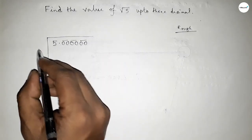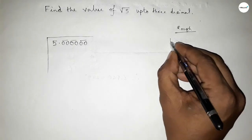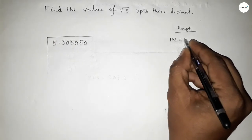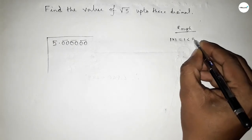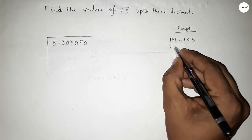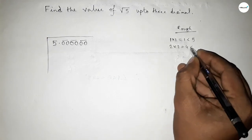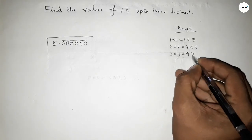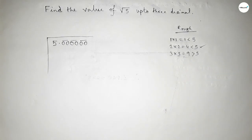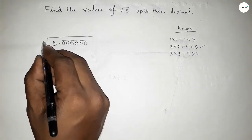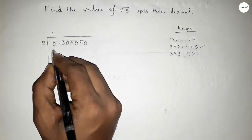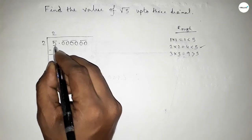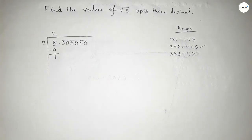Now drawing the division symbol. What should we put here to get which is less than 5? If we put 1 then 1×1=1 which is less than 5. If we put 2 then 2×2=4 which is less than 5. If we put 3 then 3×3=9 which is greater than 5, so we should put here 2. So 2×2=4.